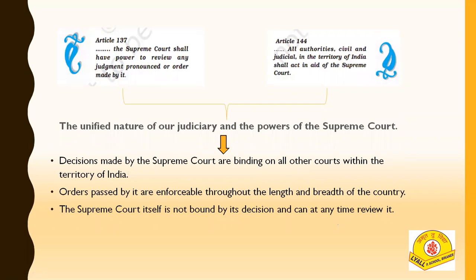A further question arises: can the Supreme Court's ruling be wrong, or is it optional? Under Article 137, the Supreme Court shall have the power to review any judgment pronounced or order made by it. The word 'shall' here is mandatory — this is mentioned under Article 137.